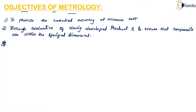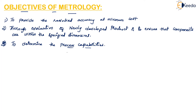The next objective is to determine the process capabilities — meaning, to what extent a process can provide quality or accuracy. That can be determined with the help of metrology.